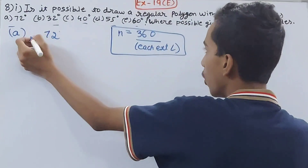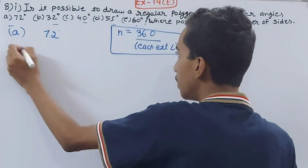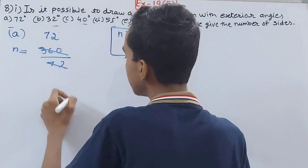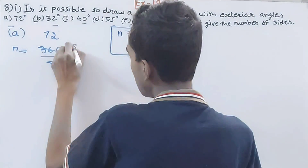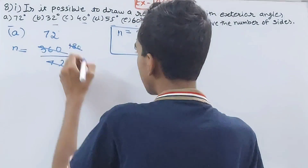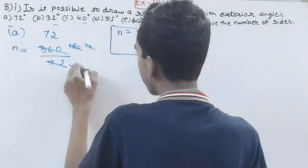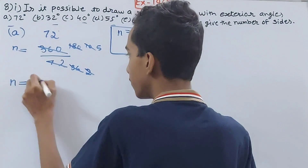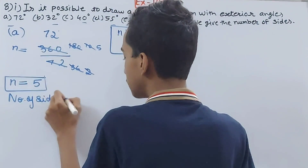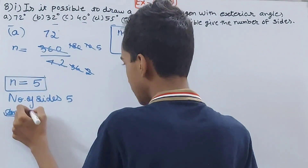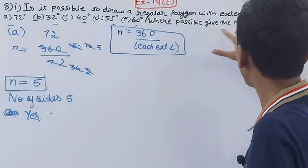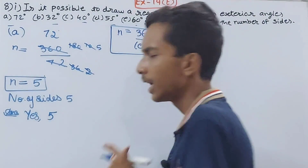For part a, the exterior angle is 72 degrees. So n will be equal to 360 divided by 72. Cancelling, 360 divided by 72 gives us 5. The number of sides is 5. So yes, you can make a polygon with it, and it will have 5 sides. Where possible, we also give the number of sides.